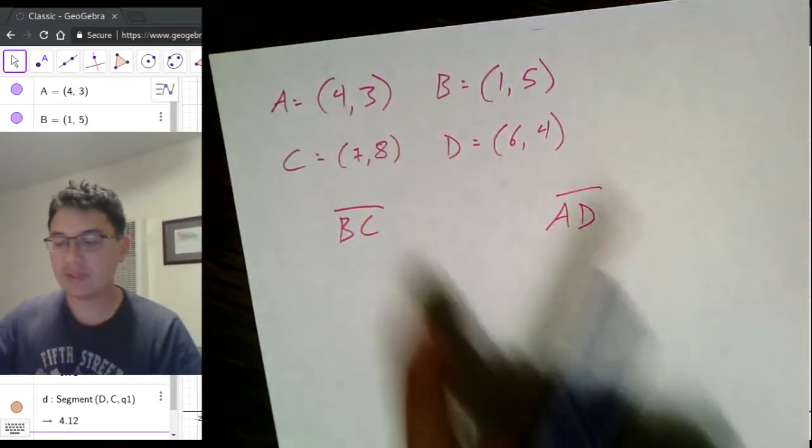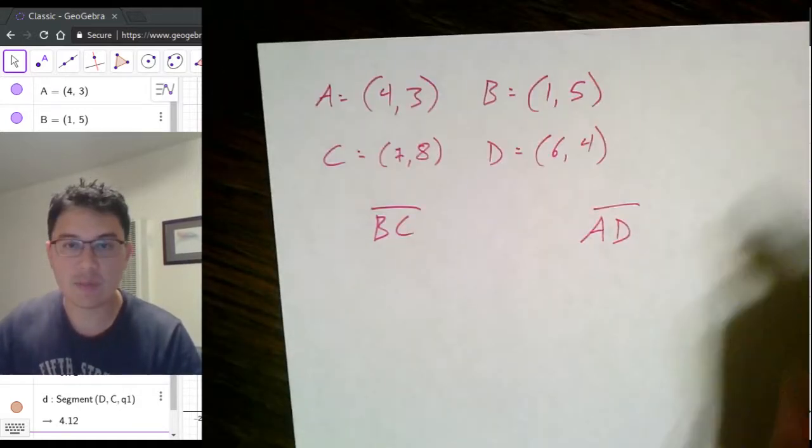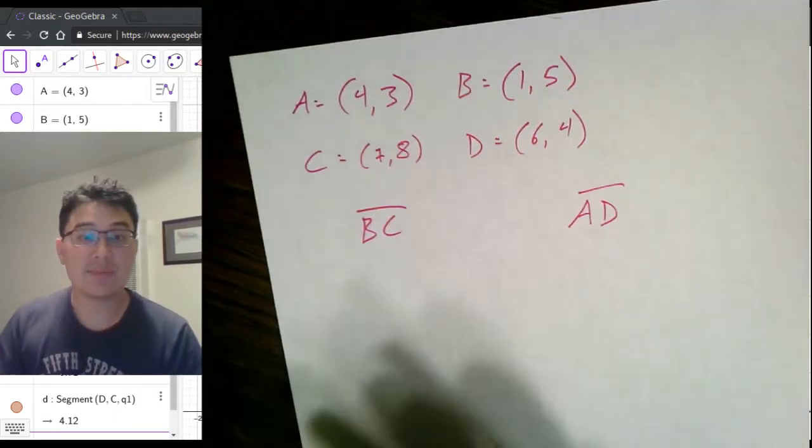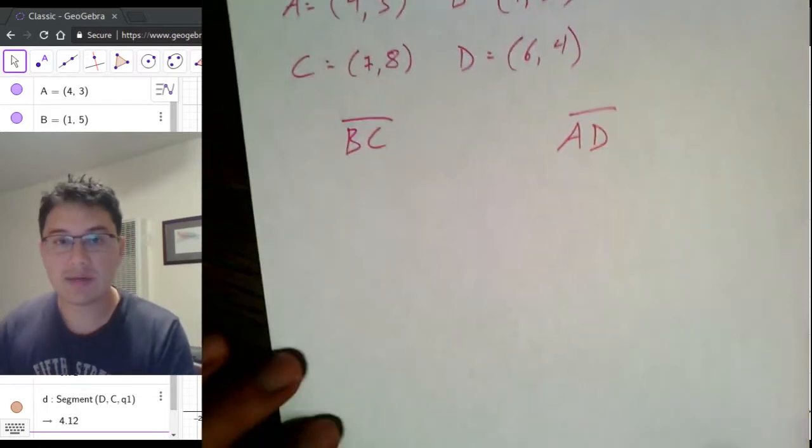So, we go back here, we have our points. I'm looking for the slope between B and C, and the slope between A and D. I'm going to speed up the video. You guys go ahead and stick everything into the slope formula and see what values you guys get.